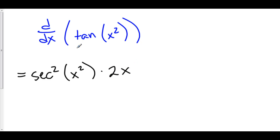So when you do this in your head, think this: tangent of stuff. The derivative of tan of stuff is secant squared of stuff times the derivative of your stuff.